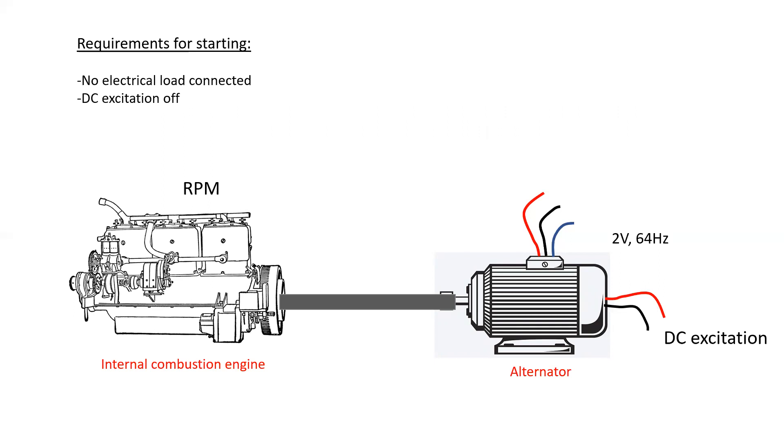Requirements for starting is that there is no electrical load connected to the alternator, and the DC excitation is off. The prime mover starts spinning, and we will have a frequency that's equivalent to whatever the RPM is, and a very low voltage. The very low voltage is due to no DC excitation, very little magnetic lines of flux being cut.